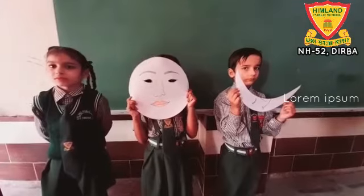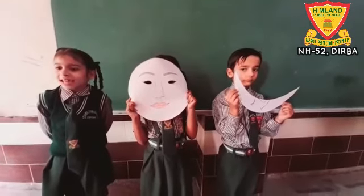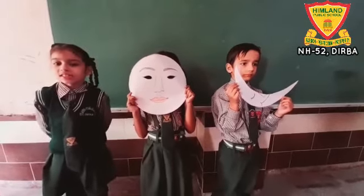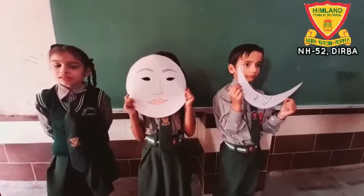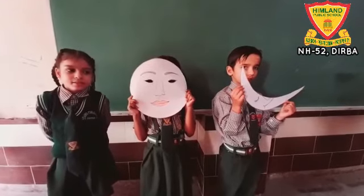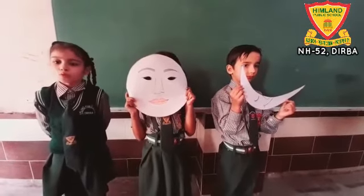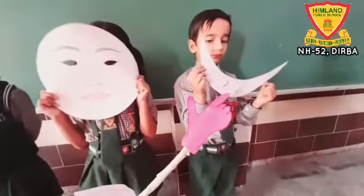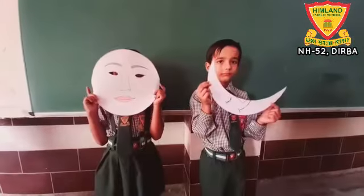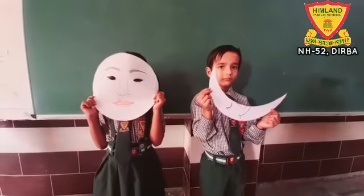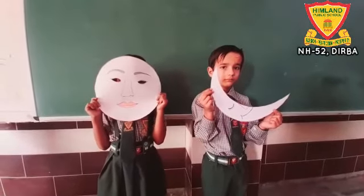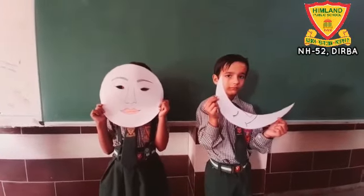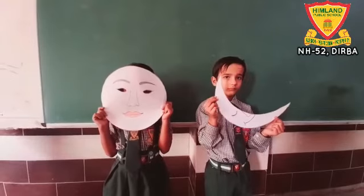Avneet, tell me about the moon. We can see the moon at night. It has two shapes — full moon and half moon. Good job. Dear students, do you know the moon doesn't have its own light? It shines bright because the light of the sun falls on it.